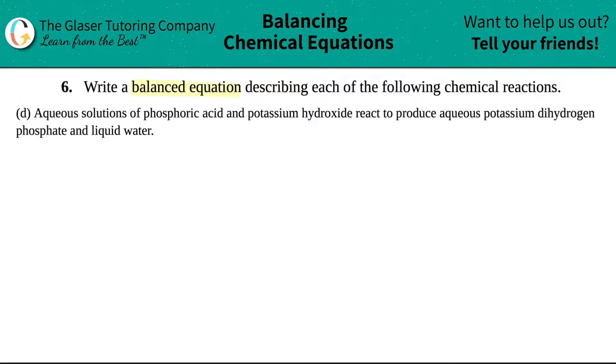In this one, it says aqueous solutions of phosphoric acid and potassium hydroxide react to produce aqueous potassium dihydrogen phosphate and liquid water.